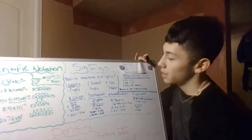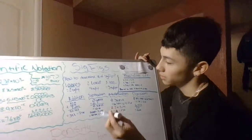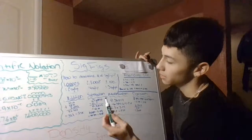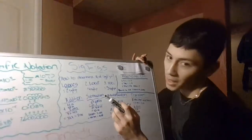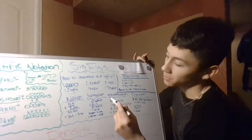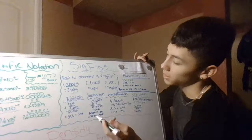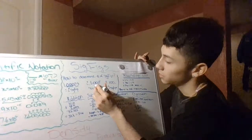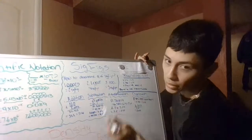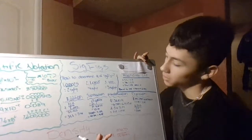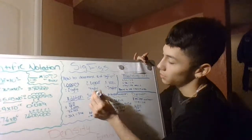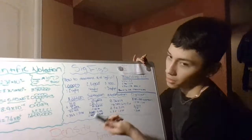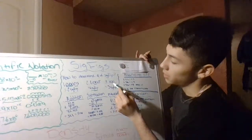On number two you have 1.008. Here you have captive zeros — zeros in between sig figs. These two zeros are in between the 1 and the 8, so they do count as sig figs. Your answer for that one is four sig figs.